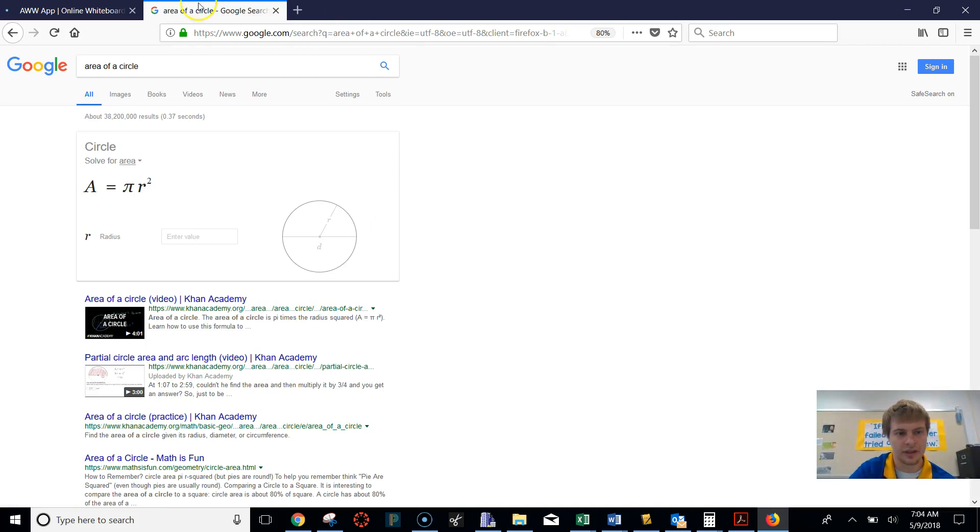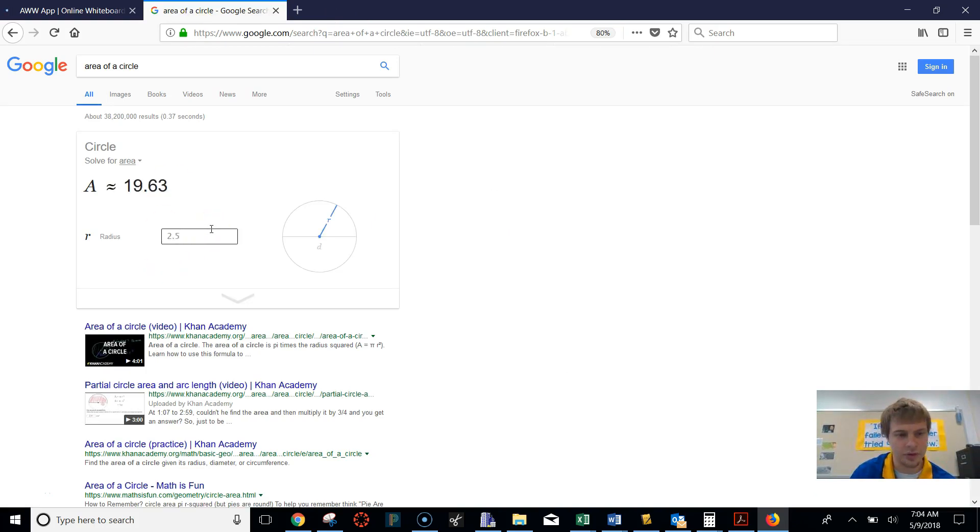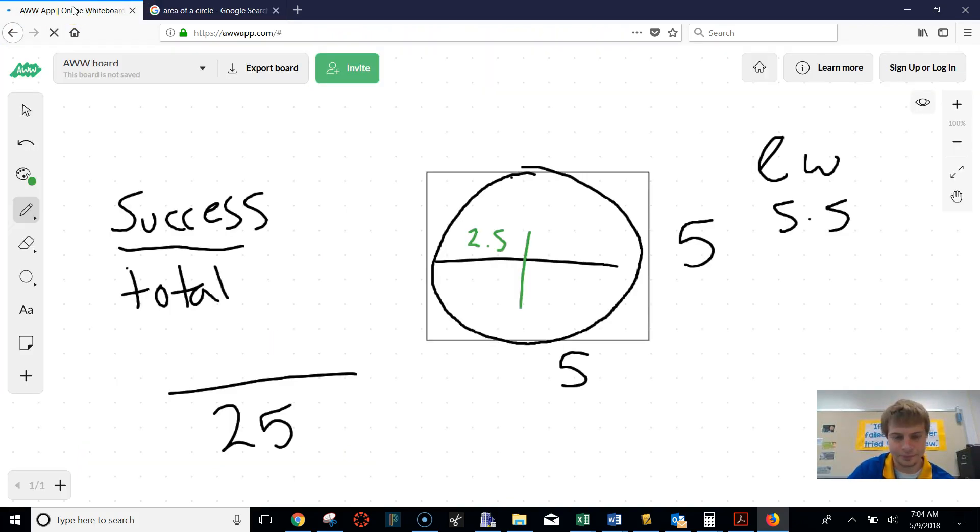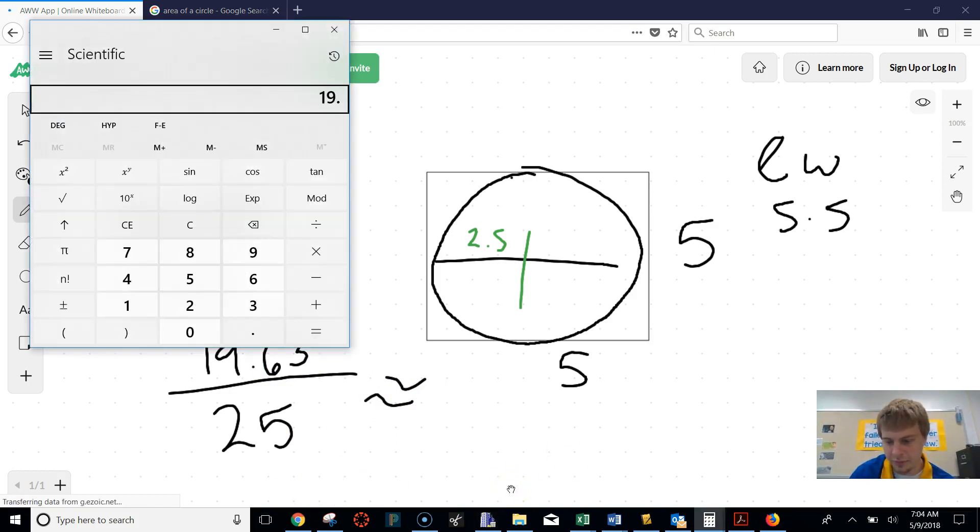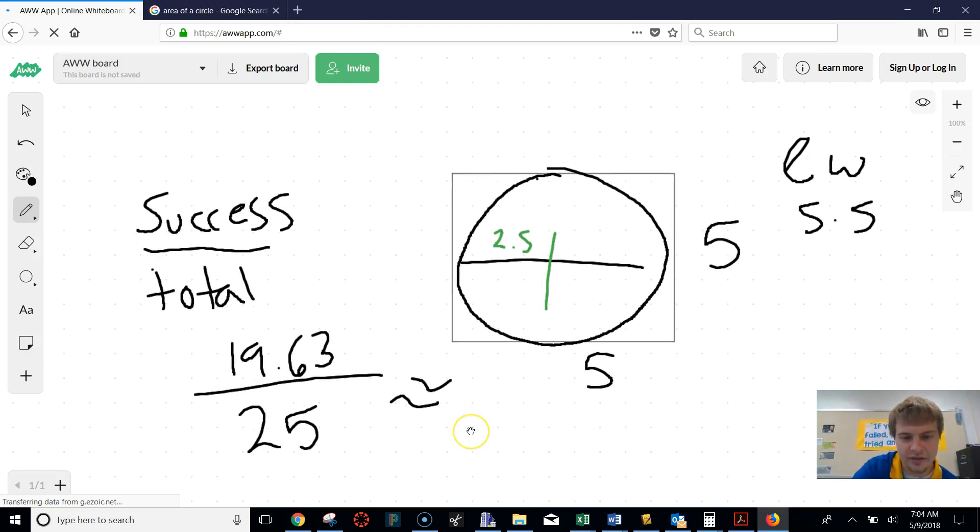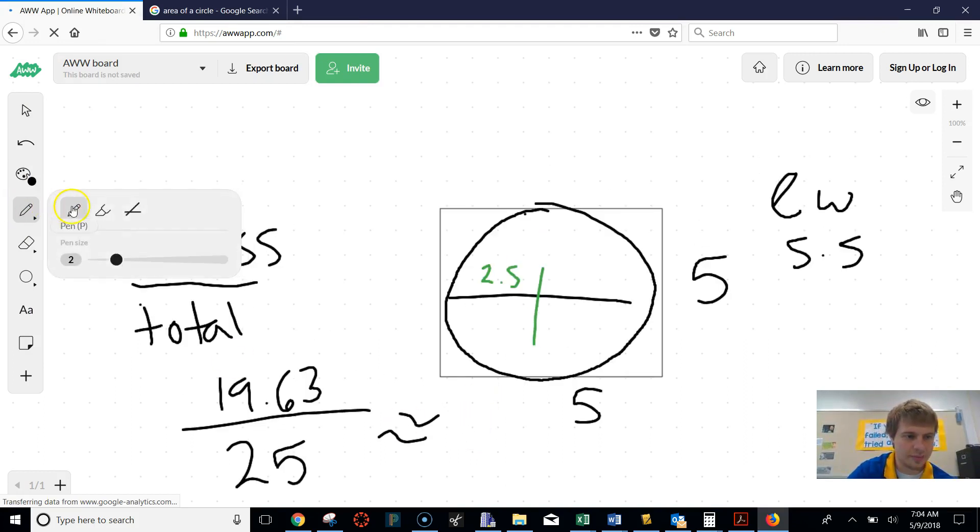So I'm going to go back to Google and let it calculate it. And our radius, we said, was 2.5. So this is about 19.63. So this was about 19.63. And now we're going to find that probability. So that probability, if I pull up my calculator, would be 19.63 divided by 25. And that's going to be about 79%. So we have about a 79% chance of hitting that circle.